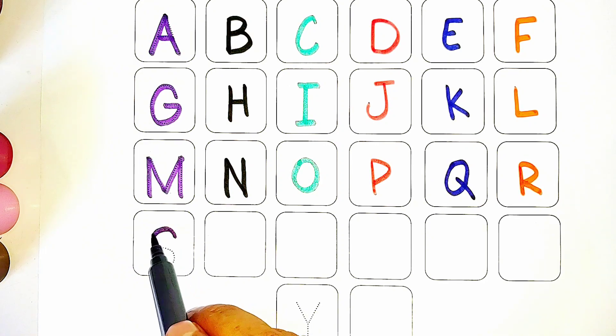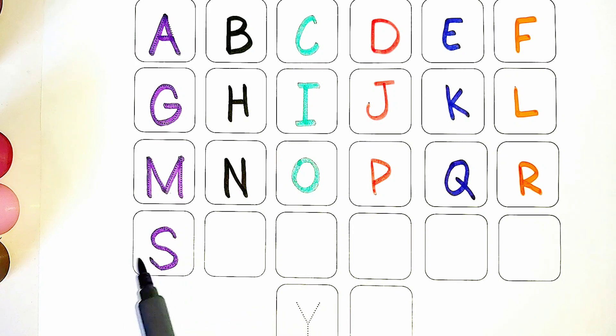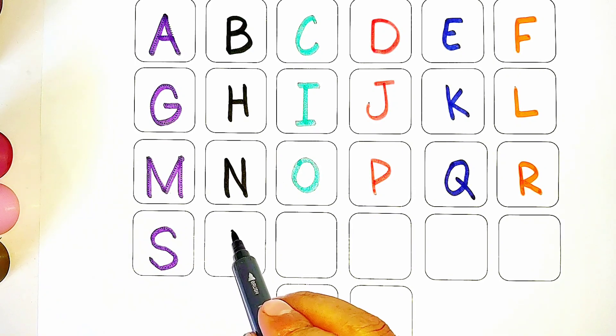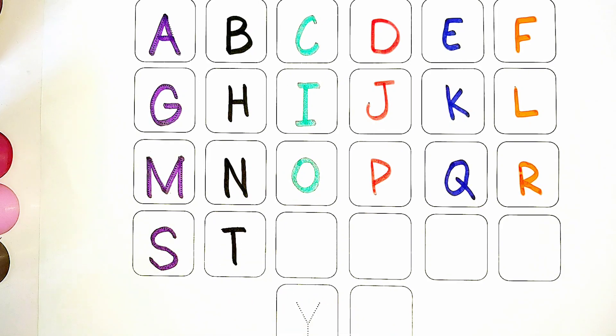S for Sammy, purple color. T for tiger, black in color.